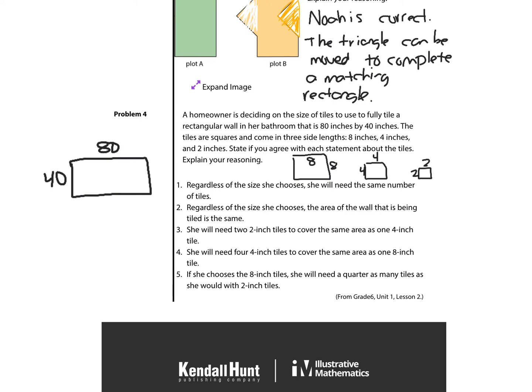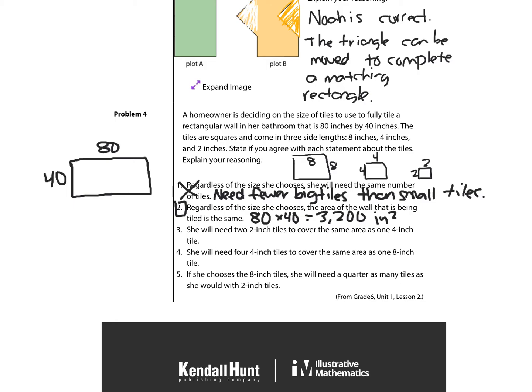Statement 1: regardless of the size she chooses, she will need the same number of tiles. That is false — I disagree. She would need fewer big tiles than small tiles, since with 2-inch tiles you need many more to cover the wall compared to 8-inch tiles. Statement 2: regardless of the size she chooses, the area of the wall being tiled is the same. That is true. The area of the wall is 80 times 40, which is 3,200 square units — the area is the same no matter what.